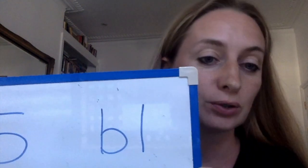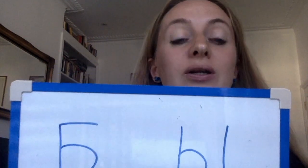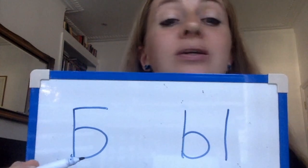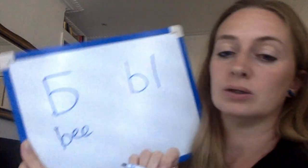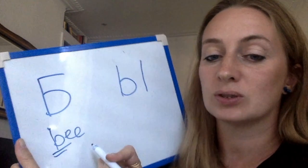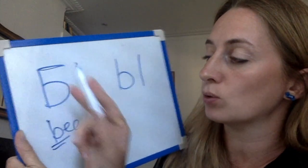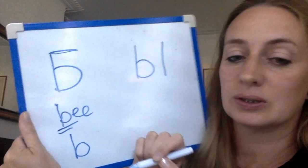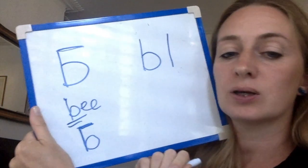Hello! This is video number 6 and we will learn two more letters. So you already know 22 letters and you will now learn another two letters. This is letter Б. The sound is the same as in English, but you write it with one more line. So B is in English and you need to add one more line on top. This is letter Б.